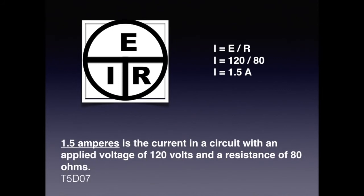In question T5D07, we are asked to solve for current given a voltage of 120 volts and 80 ohms of resistance. Covering the I on the chart, we can see that I is equal to E divided by R. We plug in the values and divide 120 by 80, giving us 1.5 amps. For the exam, know that 1.5 amperes is the current in a circuit with an applied voltage of 120 volts and a resistance of 80 ohms.